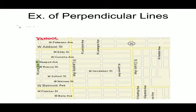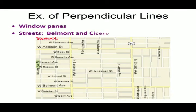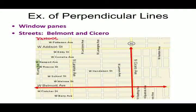Examples of perpendicular lines include window panes and streets Belmont and Cicero. You can see both streets are perpendicular to each other.